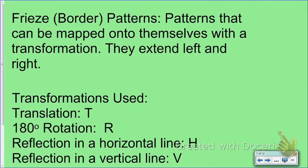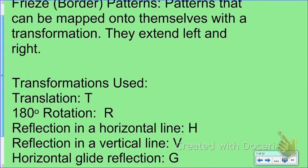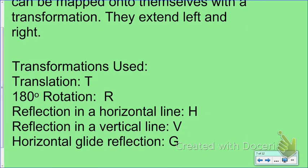The next topic is freeze patterns. A freeze pattern is a pattern that can be mapped onto itself with a transformation, and it can continue from far to the left and far to the right. The transformations used in freeze patterns are: Translation (T), 180 degree rotation (R) — the only rotation used, reflection over a horizontal line (H), reflection over a vertical line (V), and glide reflection (G).